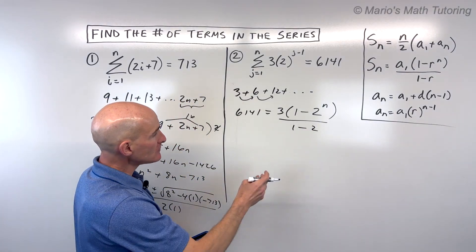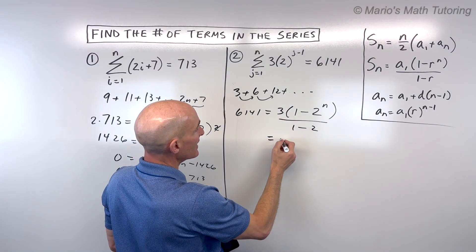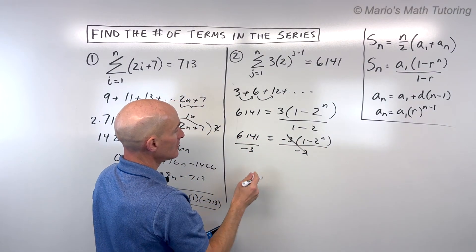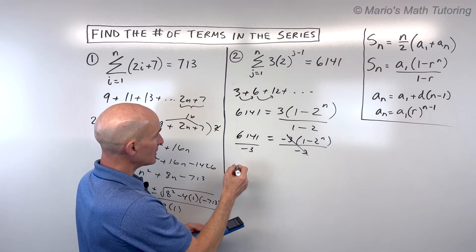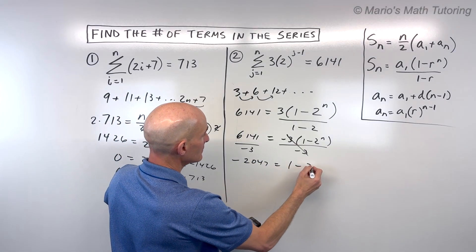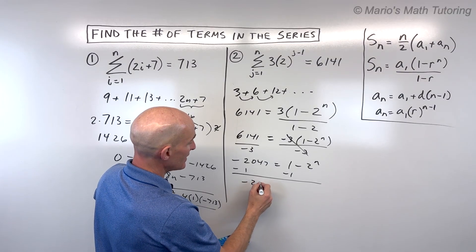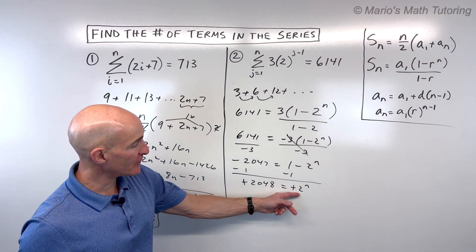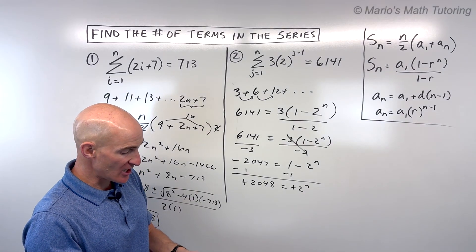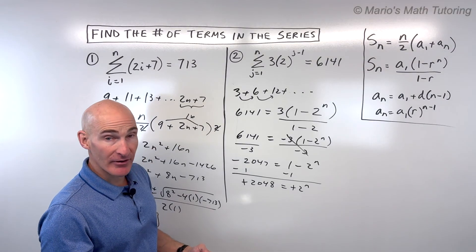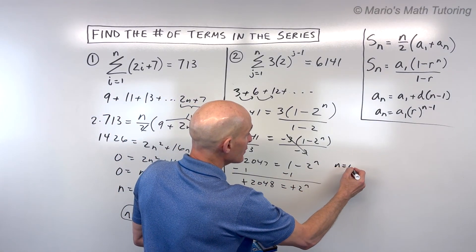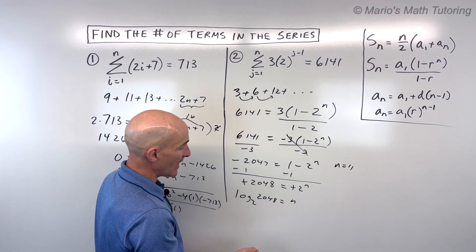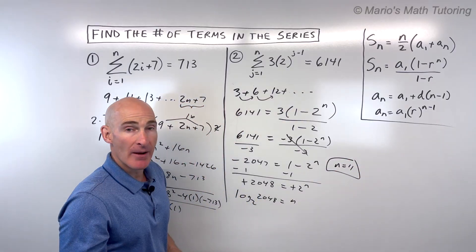So if we simplify this now, 1 minus 2 is negative 1. 3 divided by negative 1 is negative 3. If we divide both sides by negative 3, negative 2,047. If we subtract 1 from both sides, that gives us negative 2,048. If we multiply both sides by negative 1, that gives us a positive 2,048. And then now we can figure out 2 to what power is 2,048. I could do a little guess and check. So it looks like it's 11. Or you could rewrite this in the logarithmic form. You could say log base 2 of 2048 equals n, and that will also give you 11. So 11 terms in this series.